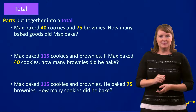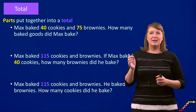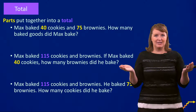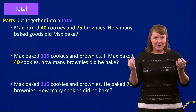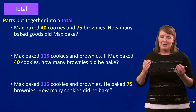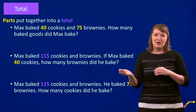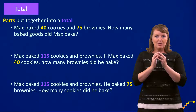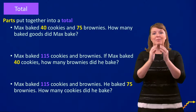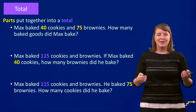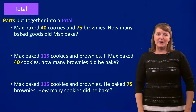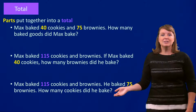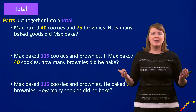But these are also total problems. Look at this one: Max baked 115 cookies and brownies. If Max baked 40 cookies, how many brownies did he bake? When I think about the schema, it is still a total problem because we're given the total and one part and we're asked to find the other part. The components are still the same — we have total and parts. And the same thing with this story: Max baked 115 cookies and brownies, he baked 75 brownies, how many cookies did he bake? Still a total problem because we've got a total and parts.